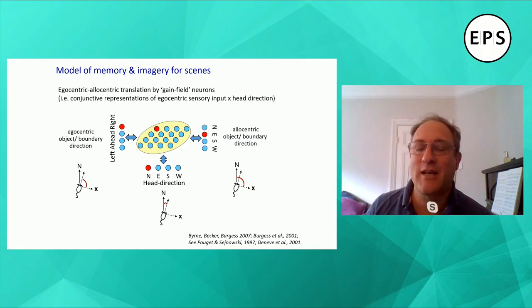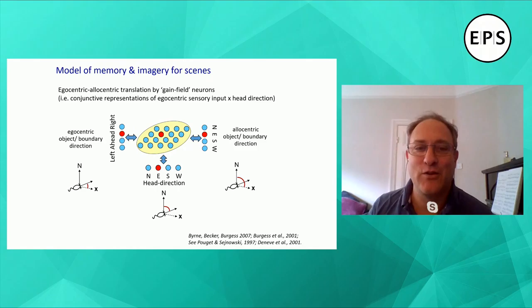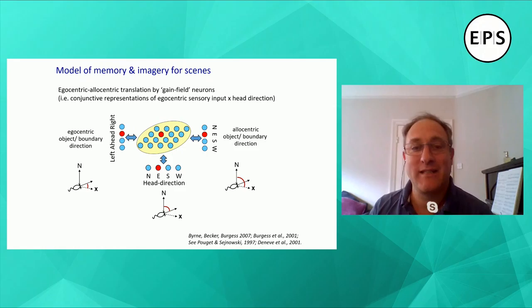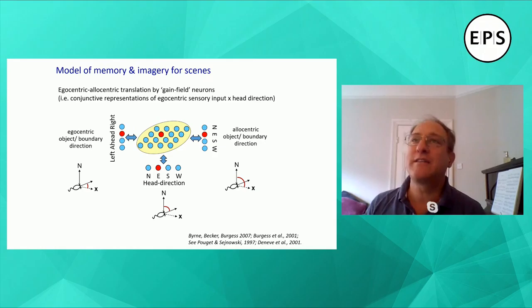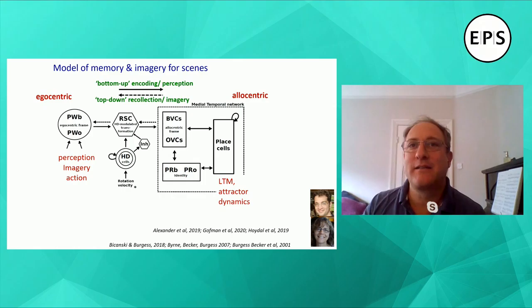If we want to do this translation, we can do it via gain field neurons — neurons that respond to both the stimulus direction and the head direction. For example, a neuron in red connects the right-centered egocentric cell to the east-tuned allocentric cell if the animal is facing north. But if it turns to face east, a different gain field neuron maps the ahead egocentric neuron to the east allocentric neuron because the object is still to the east. This gain field circuit translates between egocentric and allocentric representations.